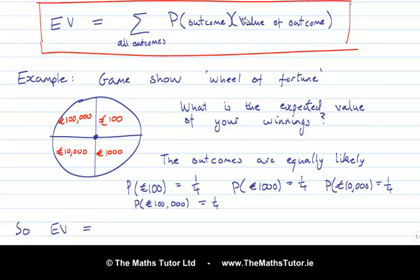So, what we do is we go through each outcome. We write down its probability. We multiply by the value. And then we add all those things up. So, the first outcome is €100. That is probability a quarter. And the value is €100. Second outcome is €1,000. Probability a quarter. Value a thousand.